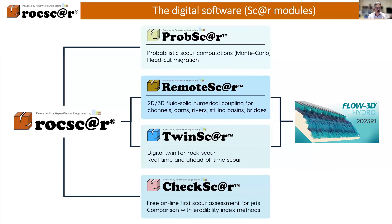If we take a closer look at the RockScour environment, we see it proposes a family of scour modules. You can see ProbSCAR for Monte Carlo probabilistic computations. RemoteSCAR is an API — an application programming interface — that connects RockScour to Flow3D. We will speak about this later on today. TwinSCAR is a digital twin real-time application of RockScour computations, and CheckSCAR is a 1D freely available approach online for plunging jets.